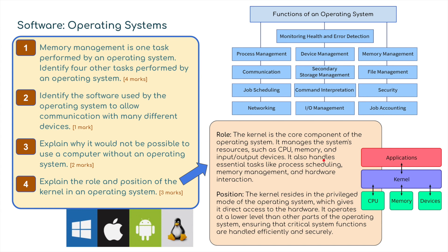Question four: explain the role and position of the kernel in an operating system - three marks. The kernel sits between the CPU, memory, and devices on one side, and the applications on the other. The kernel is the core component of the operating system. It manages the system's resources such as the CPU, memory, and input/output devices, and handles essential tasks like process scheduling, memory management, and hardware interaction. The kernel resides in the privileged mode of the operating system, giving it direct access to the hardware, operating at a lower level to ensure critical system functions are handled efficiently and securely.